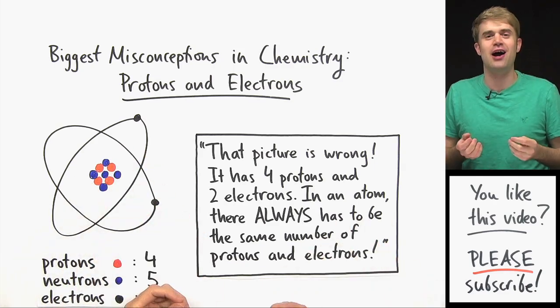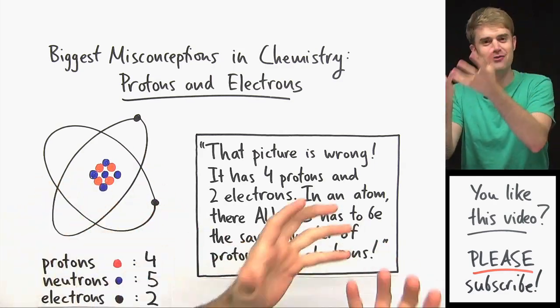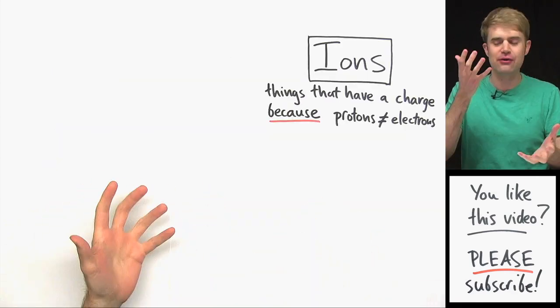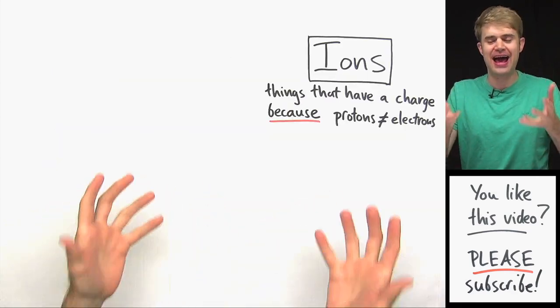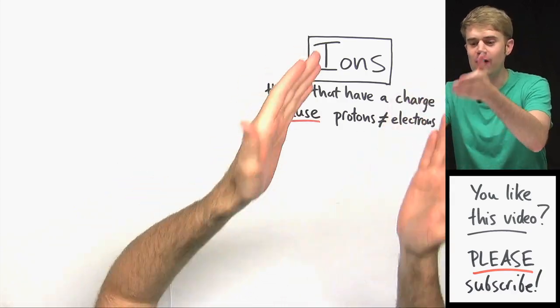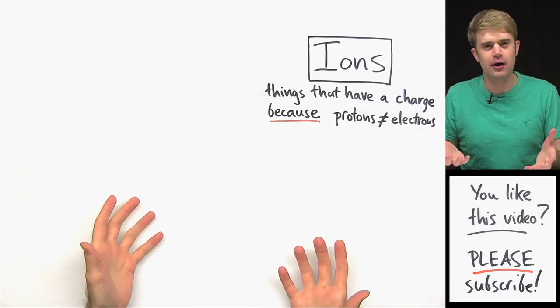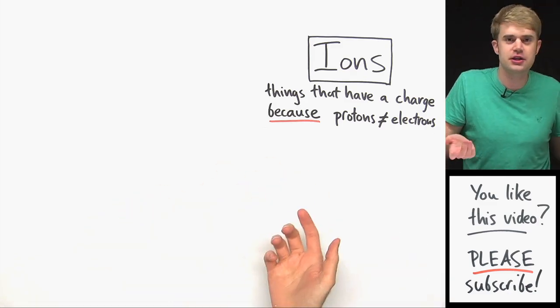There are lots of times when the number of protons and the number of electrons in an atom are different. When an atom or a group of atoms has a different number of protons and electrons, it has an electrical charge and we call it an ion. An ion is something that has a charge. You probably run into a whole bunch of ions just in your study of chemistry.